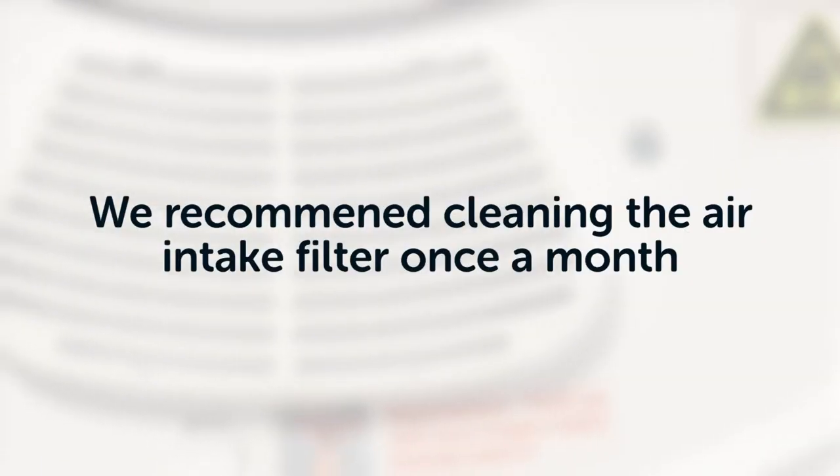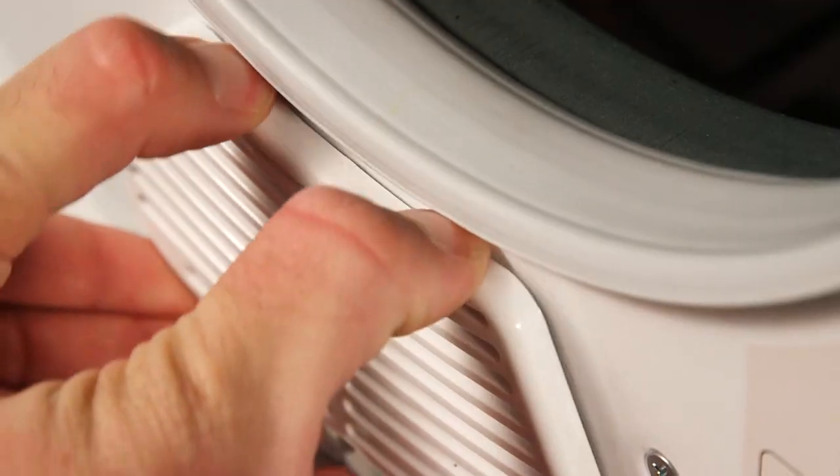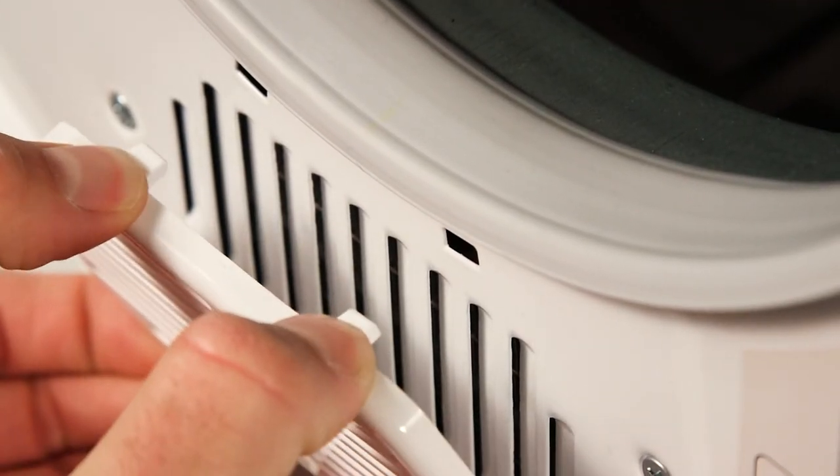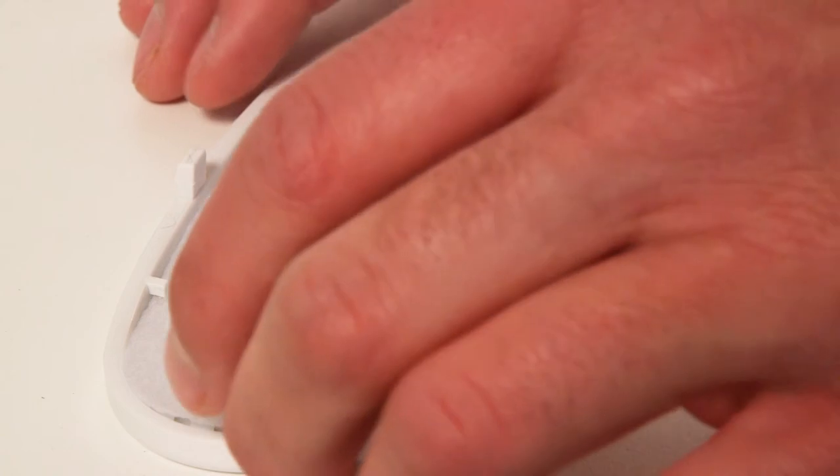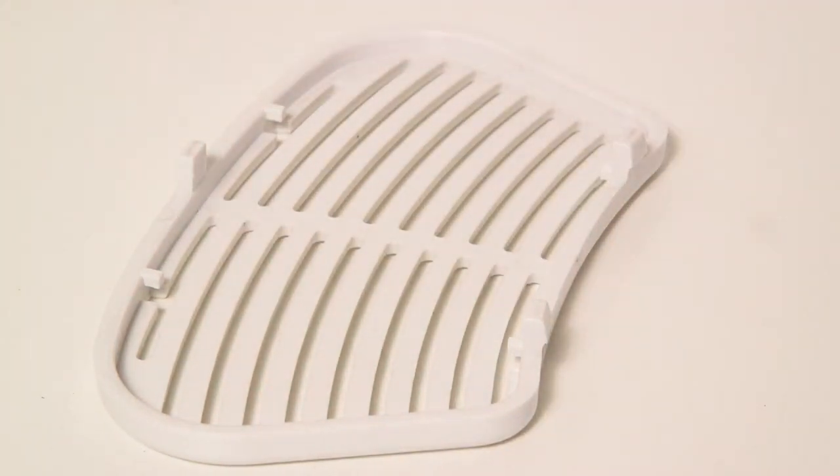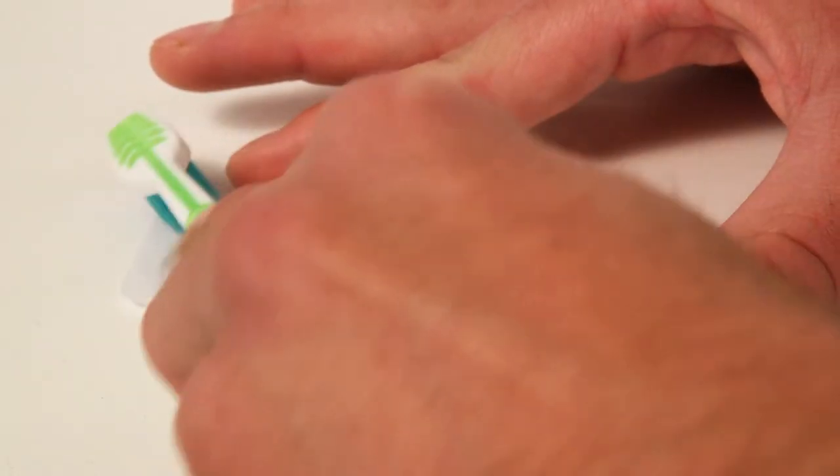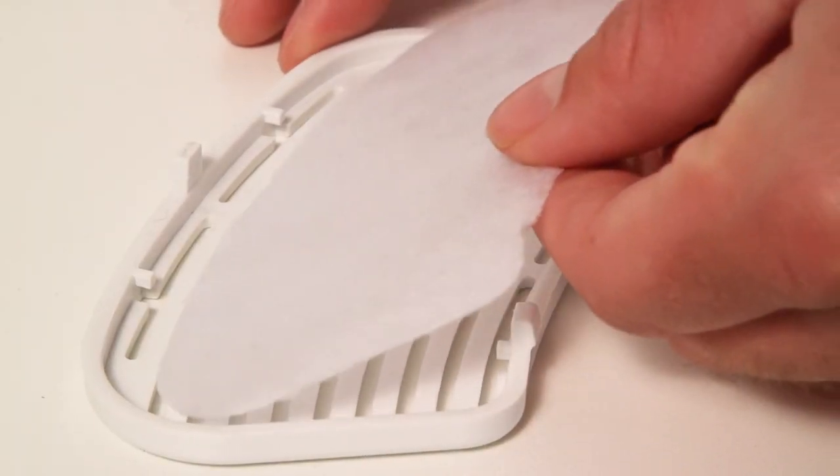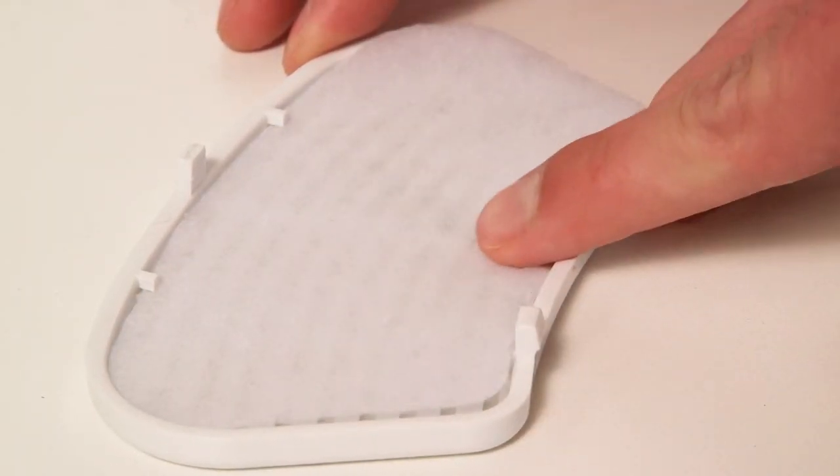We recommend cleaning the air intake filter once a month. Remove the air intake filter by pulling it outwards. Remove the filter inside the air intake shroud and clean it with a soft brush. Reinsert the filter and install the air intake shroud.